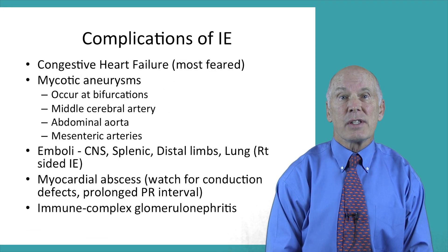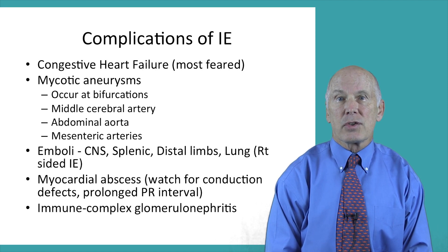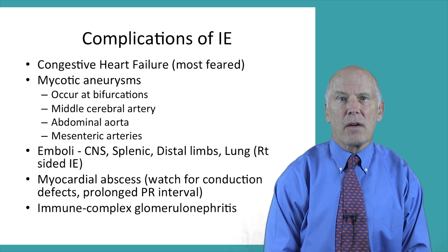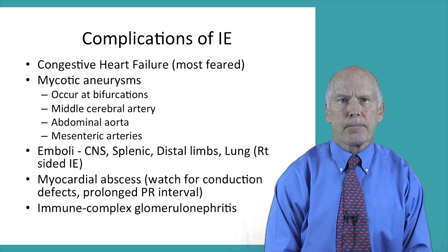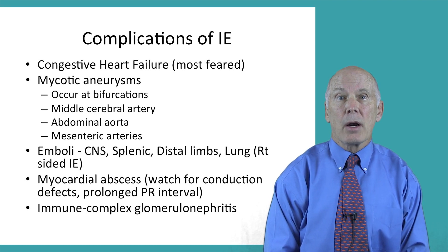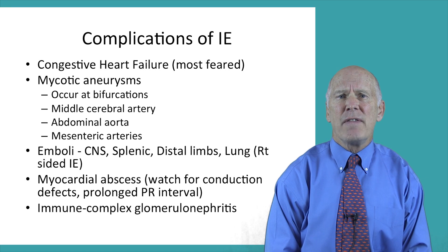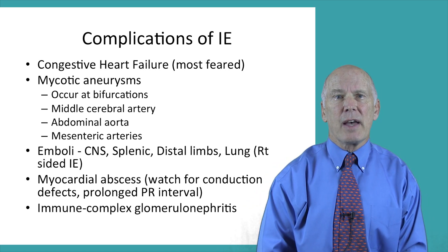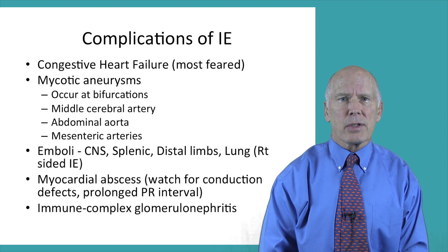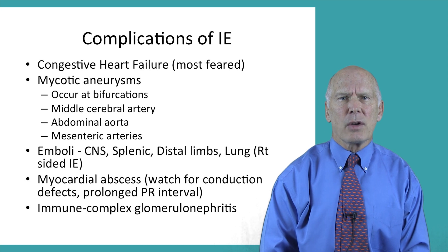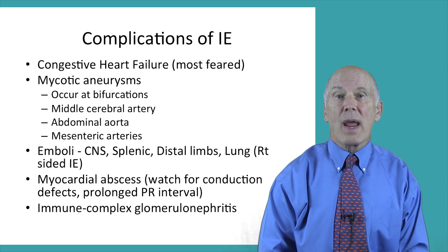In addition to antibiotics, clinicians need to be on guard for serious complications associated with infective endocarditis. The most feared is congestive heart failure, which most commonly develops in association with aortic valve endocarditis. Mycotic aneurysms are another potential problem, most commonly associated with Staph aureus. They are caused by bacteria lodging at vessel bifurcations and damaging the intima. Rarely, these aneurysms can rupture, causing intracerebral hemorrhage. Emboli most commonly travel up the right carotid artery, lodging in the distal branches of the right middle cerebral artery.